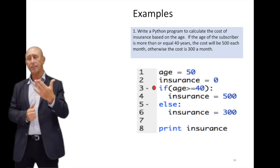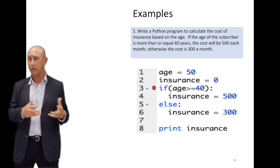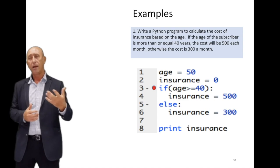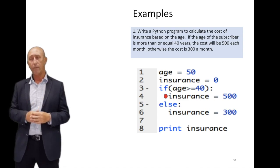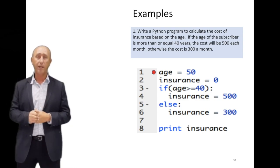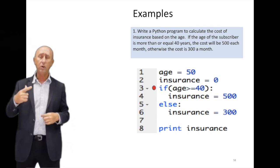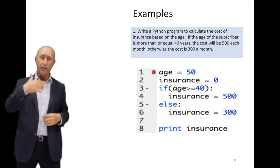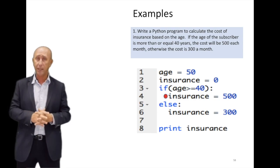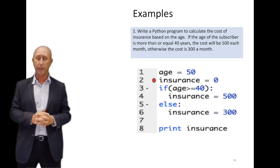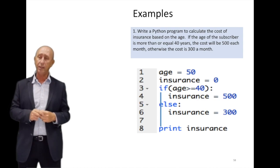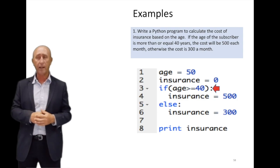The logic is correct, but the age is fixed (hardcoded), which doesn't make real sense. In practice, a program like this would be used by a clerk or sales agent who needs to enter the customer's age. So we're going to modify this example to ask the user to enter their age, and then the program will tell them the cost. Note a common mistake: the colon is required after both 'if' and 'else' — without it, you'll get an error.